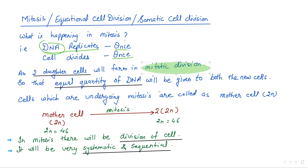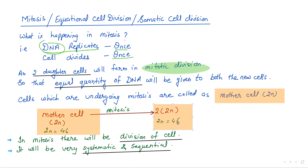The cell which is going to divide is called the mother cell, and the cells formed are called daughter cells. In mitosis, the division of the cell is very systematic and sequential, with different phases present, making the process ordered and structured.